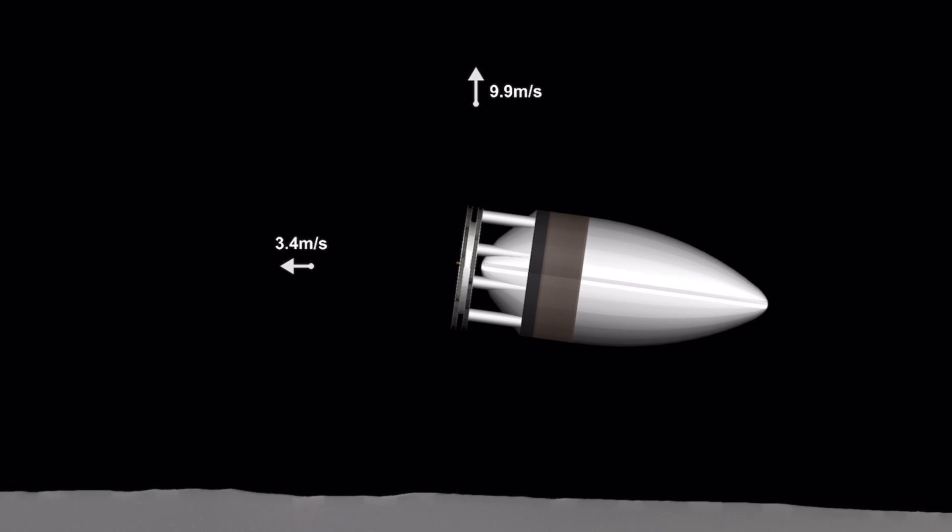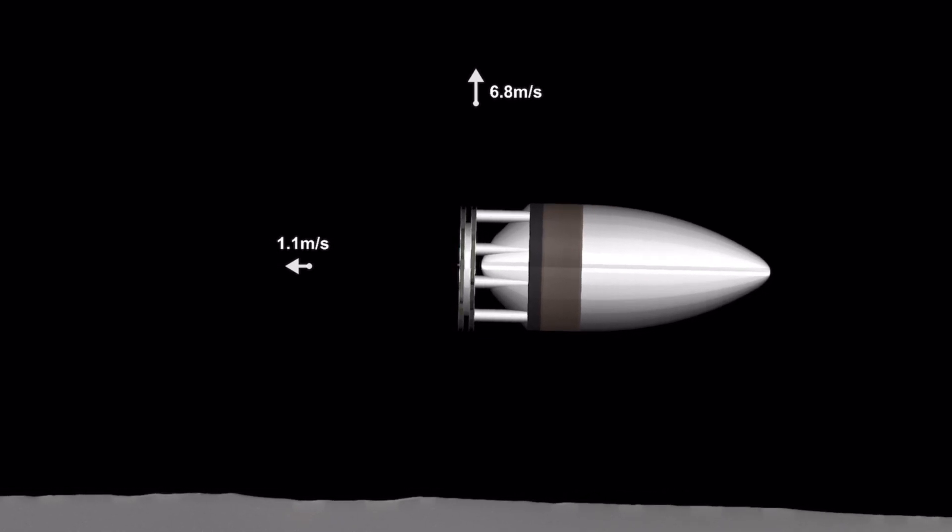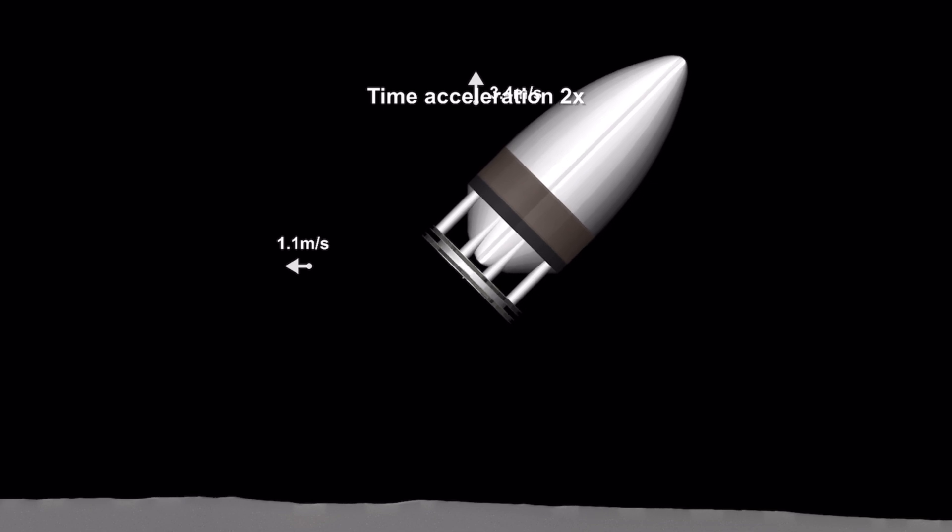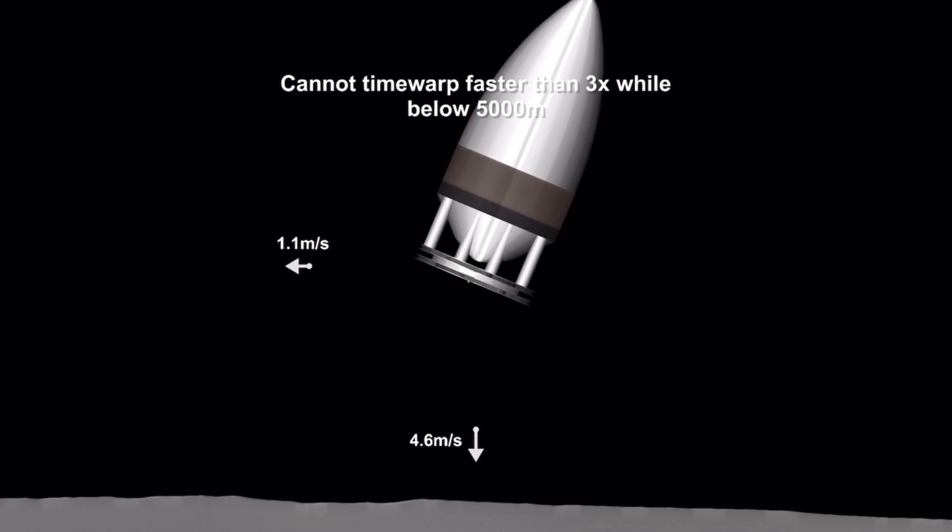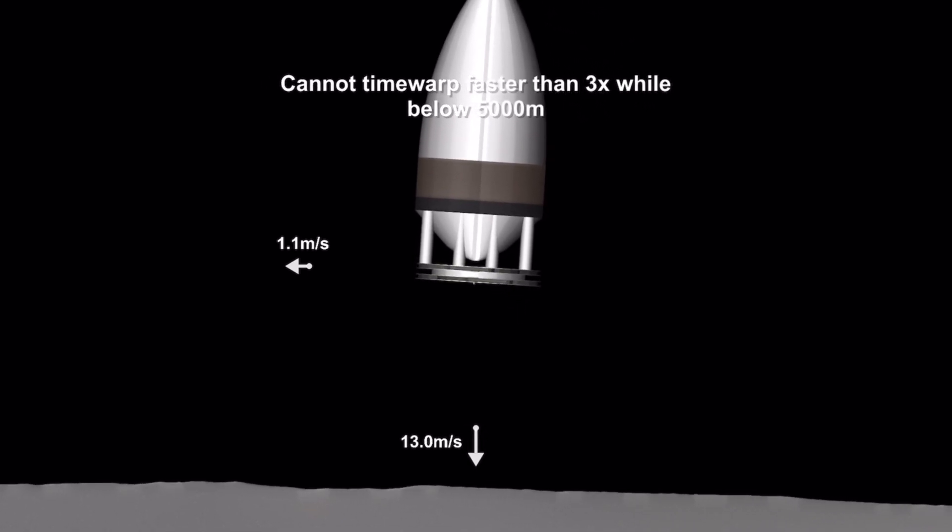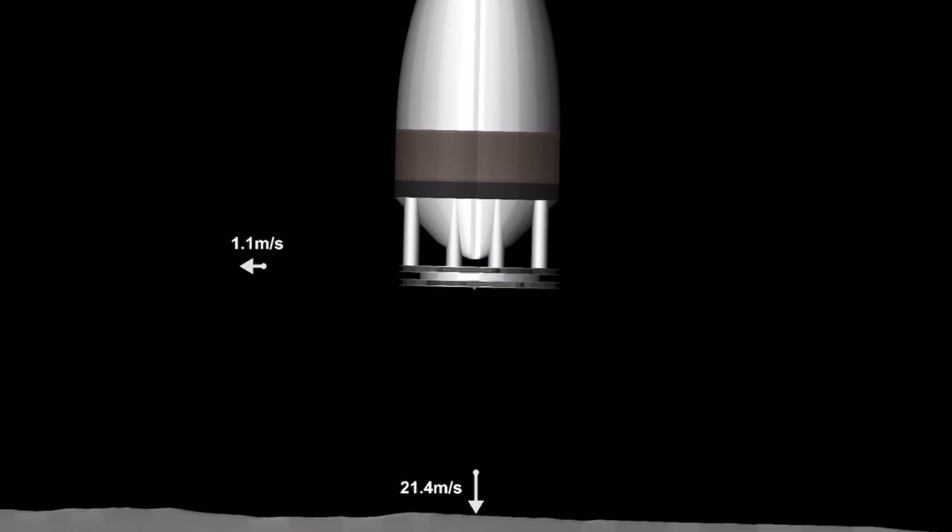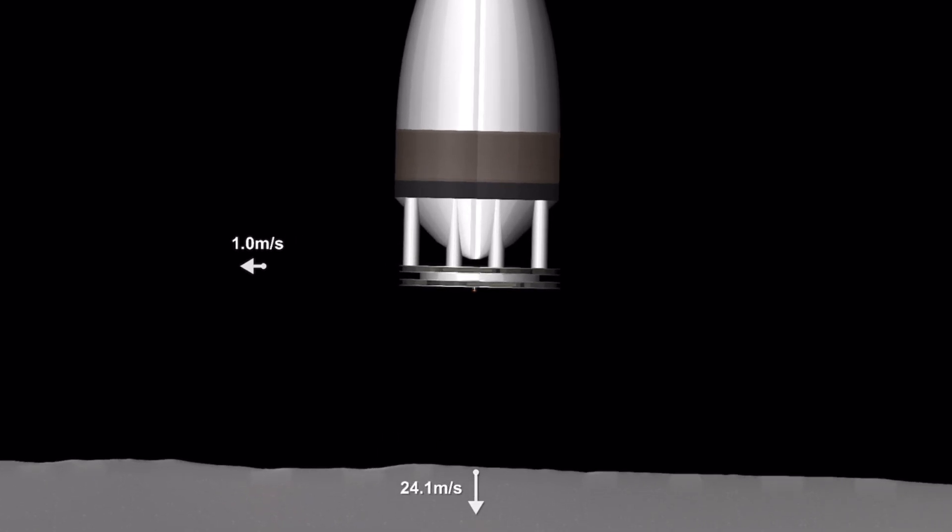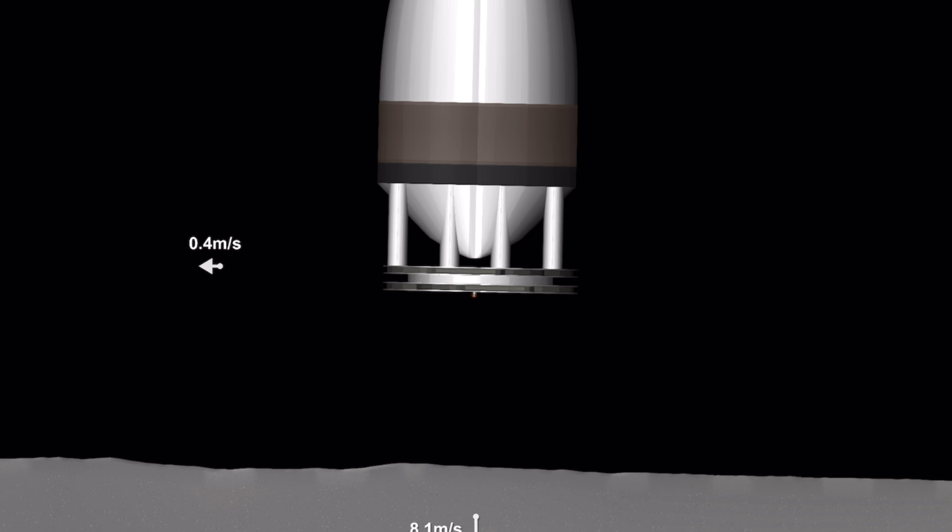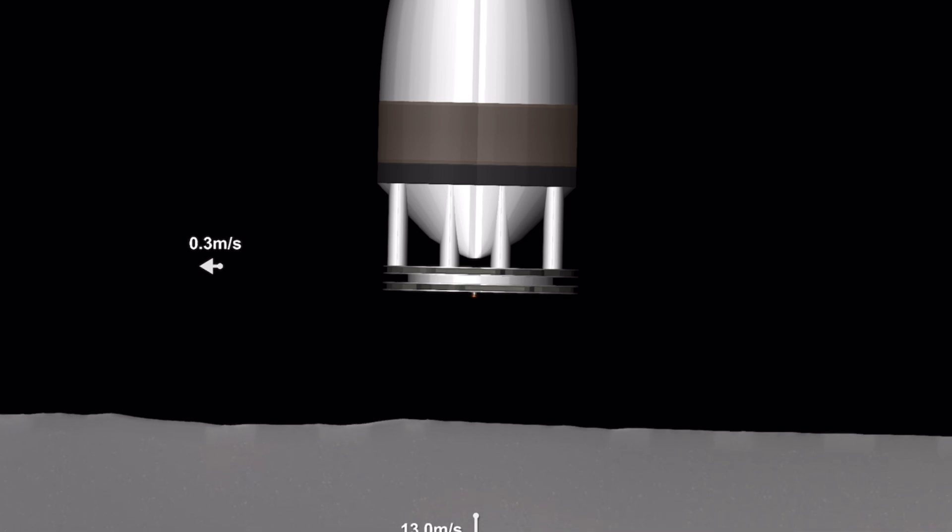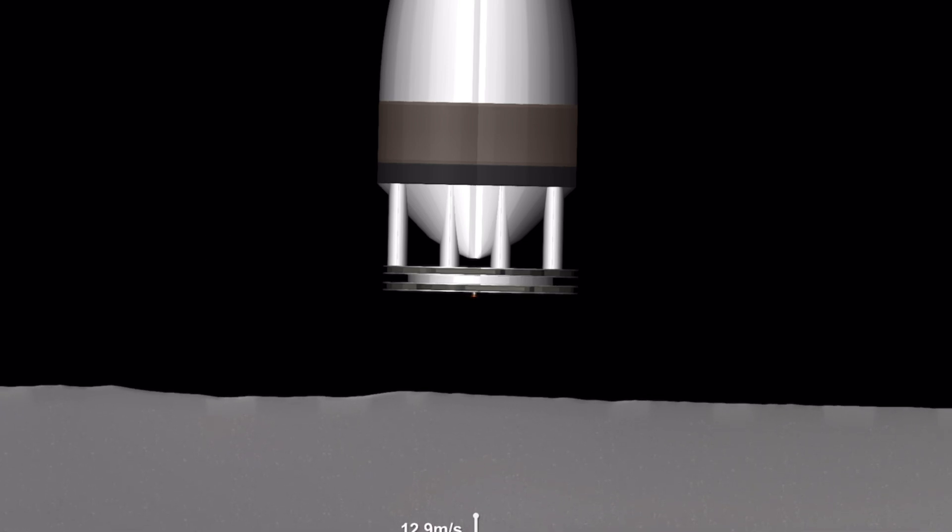As you can see, I cancelled out all my side velocity and I just have to wait till I get down. So you have to just turn on the engine and slow it down, and you have to be careful to land it in a smooth terrain since it's a wide rocket.